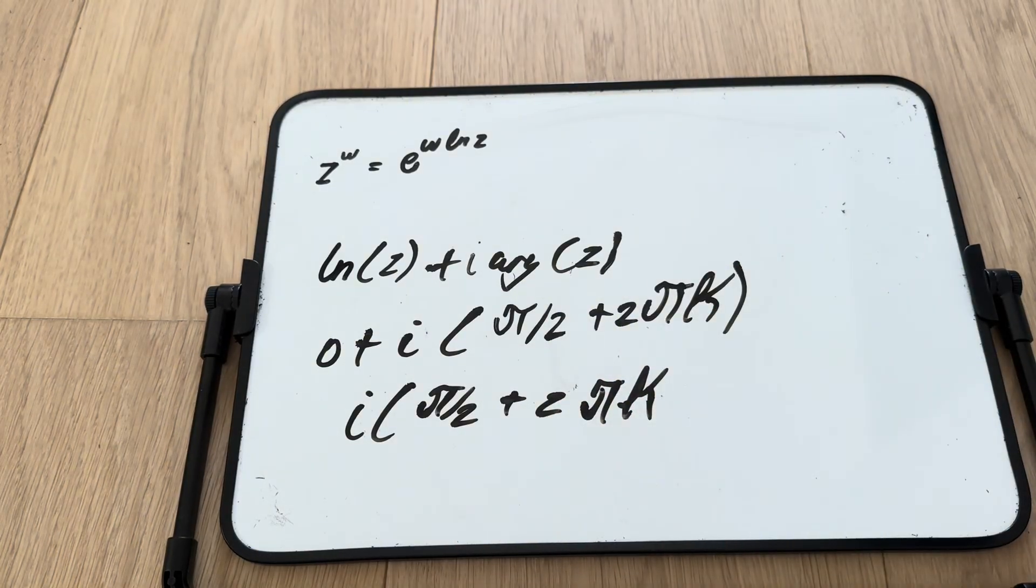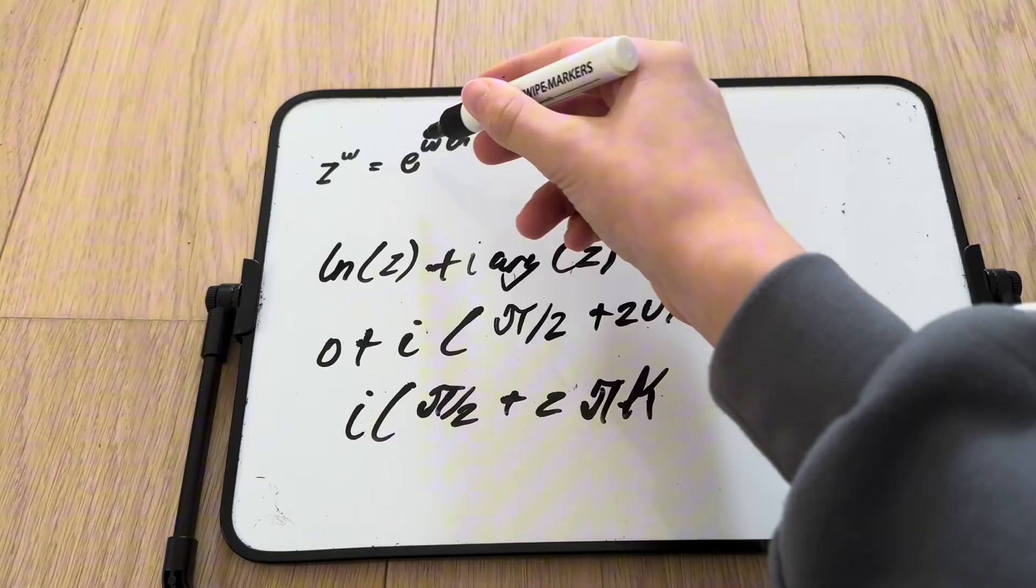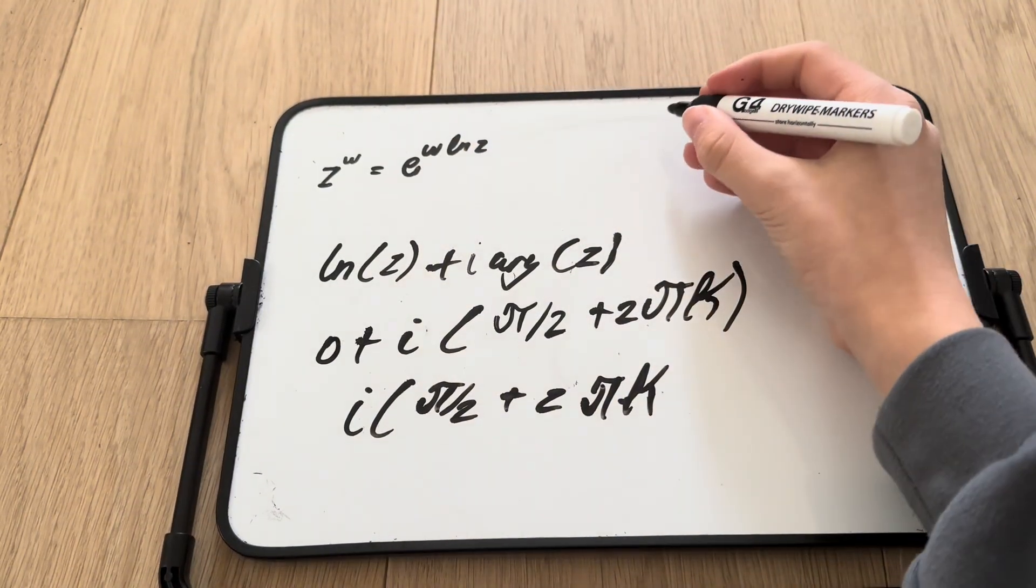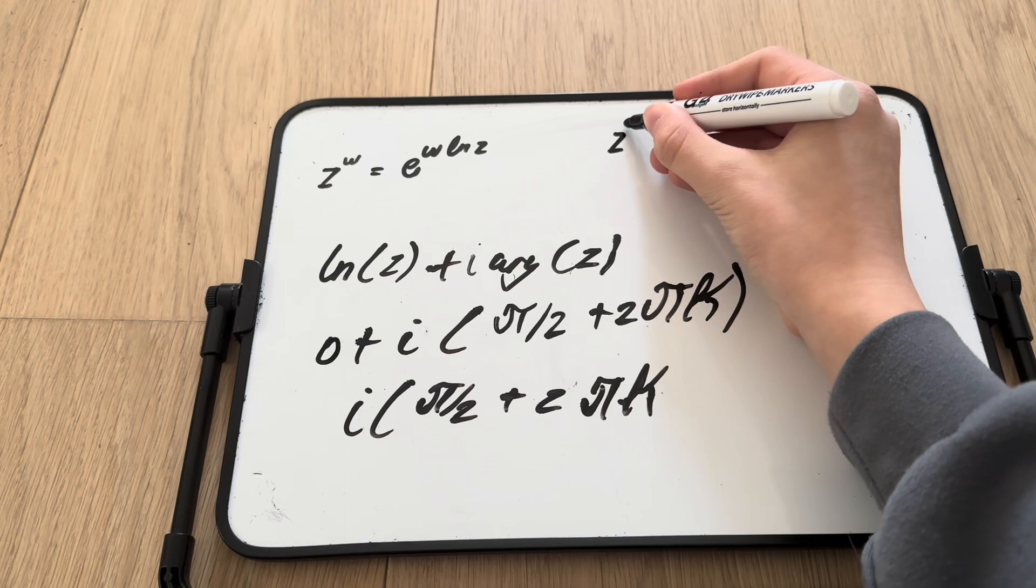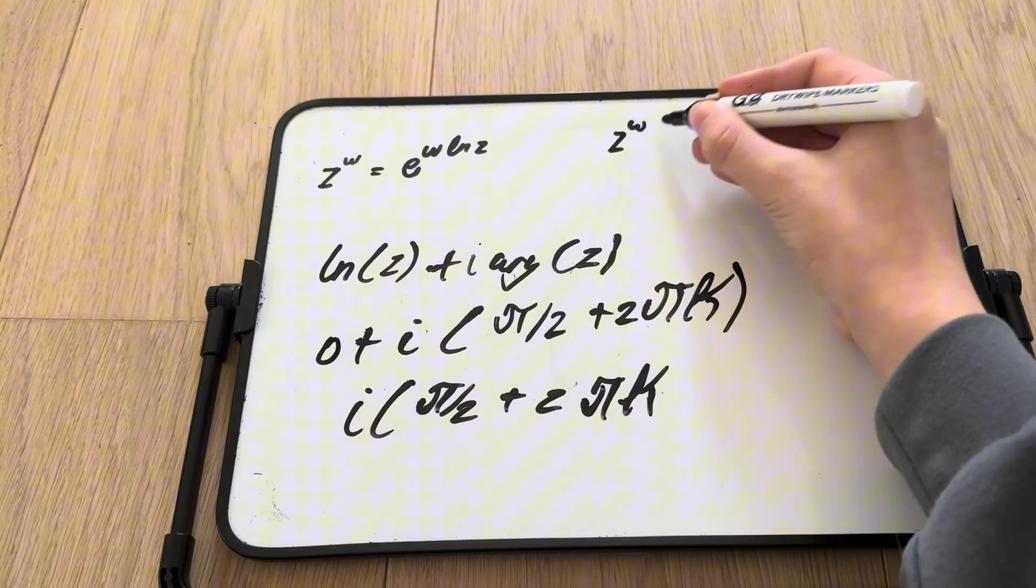So now we have i multiplied by pi over 2. And since w is just i, we can do it like that. So now we have z to the w, which is i to the i. I'll just keep it as z to the w.